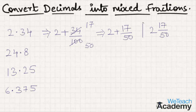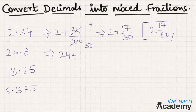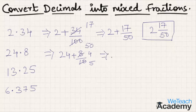Now let us consider the second example, 24.8. The expanded form can be written as 24 plus the decimal part 8 by 10. Simplifying this decimal part, 2 times 4 is 8 and 2 times 5 is 10. Hence we get 24 plus 4 by 5. Therefore 24 4 by 5 is the mixed fraction form of 24.8.